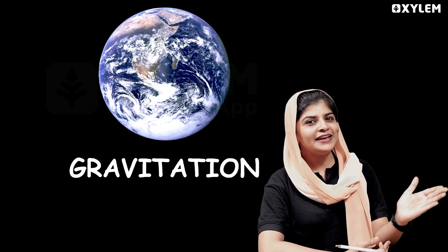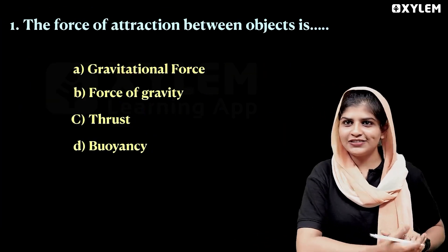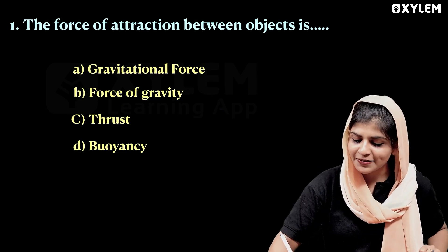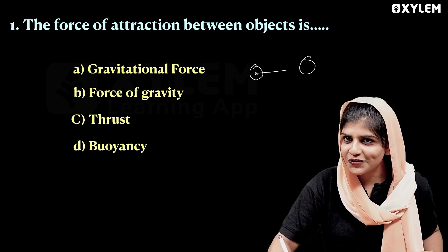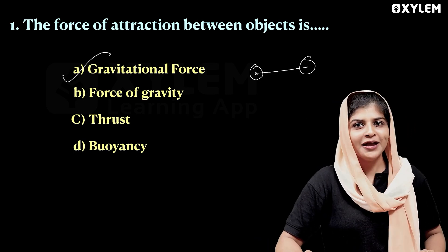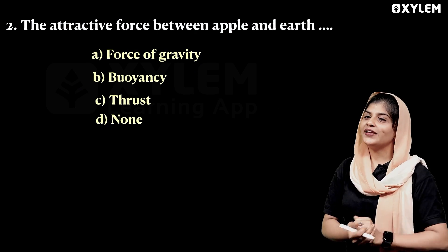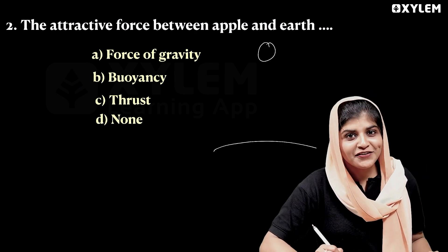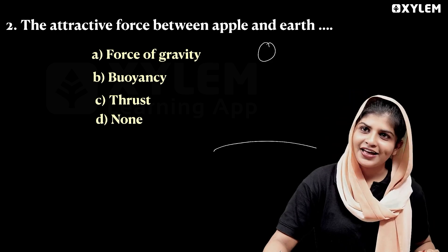The first question: the force of attraction between objects — we call it gravitational force. The next question: the attractive force between apple and earth — one object. We call it force of gravity.